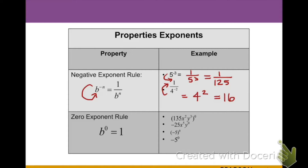The next property is the zero exponent rule: any base raised to the zero power will always equal 1. For example, 135x²y³ all raised to the zero power simplifies entirely to 1. In the second example, negative 25x⁵y to the zero power — since only y is raised to the zero power, only that part reduces to 1, leaving us with negative 25x to the fifth.